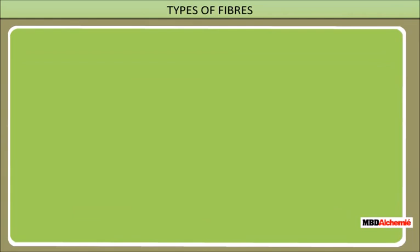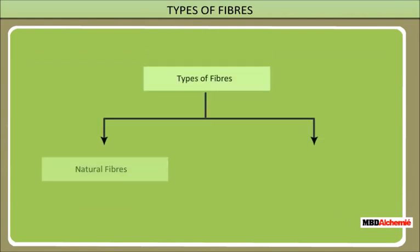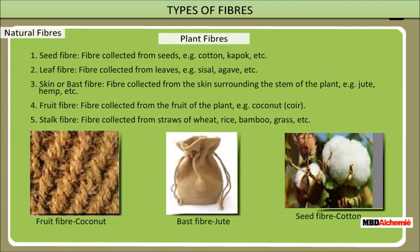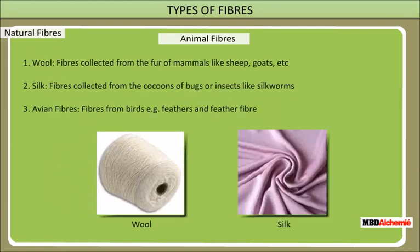There are two types of fibers: natural fibers and man-made fibers. Examples of plant fibers are coconut, jute, and cotton. Examples of animal fibers are wool, silk, and avian fibers.